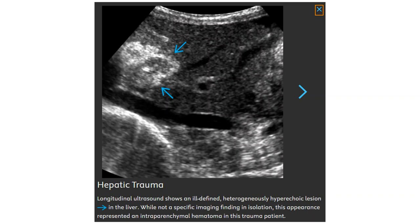An ill-defined heterogeneously hypodense, hypoechoic lesion in the liver, while not a specific imaging finding in isolation, represented an intraparenchymal hematoma in the setting of palpation trauma.